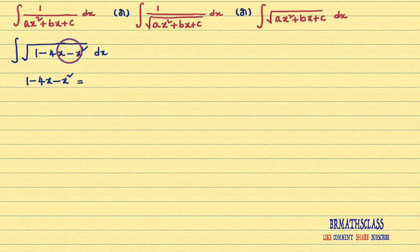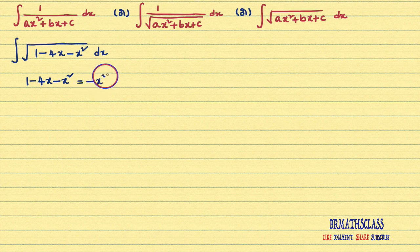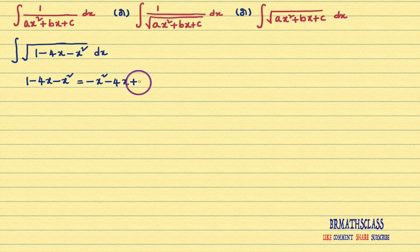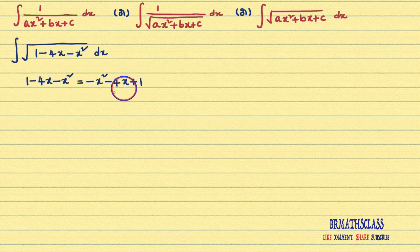Here, to confuse you, they have not given it in the right order. The right order is: first the x² term, next the x term, next the constant term. So I have written the x² term first, then the x term, then the constant term. Now it looks like ax² + bx + c.